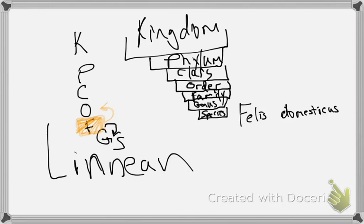Notice how I drew my boxes — it's really big up here but getting smaller and smaller. It's not because I'm a bad artist; it's to show how it's getting more and more limited. The animal kingdom is huge. The phylum Chordata is still pretty huge. Class Mammalia is still pretty huge — you've got anything from humans to wombats. Order Carnivora is still pretty huge — anything from bears to cats.